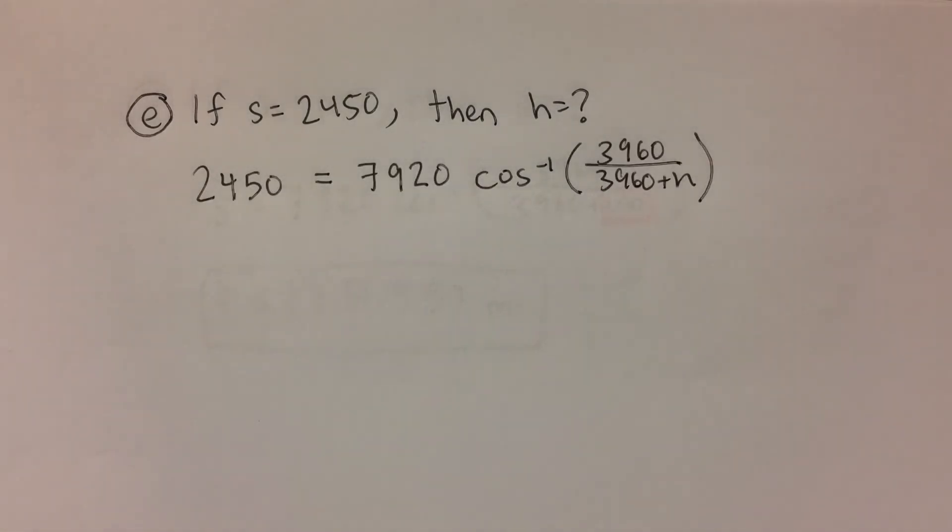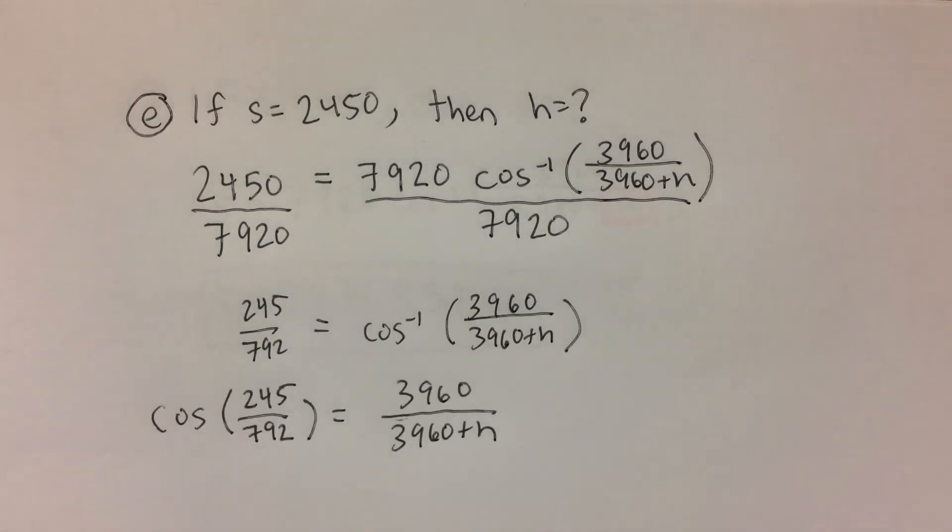First, we will divide both sides by 7,920. Then, we will take the cosine of both sides of the equation. Now, we will multiply both sides of the equation by 3,960 plus h. In doing so, we will distribute the constant on the left-hand side of the equation to both 3,960 and to h.